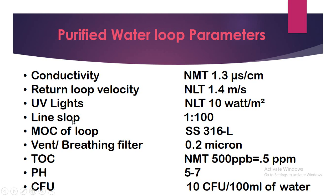The loop pipe should have a slope — a ratio of 1 in 100 — so that water drains automatically by gravity. The material of construction (MOC) of the piping and storage tank should be SS316L grade. The vent or breathing filter size should be 0.2 micron.